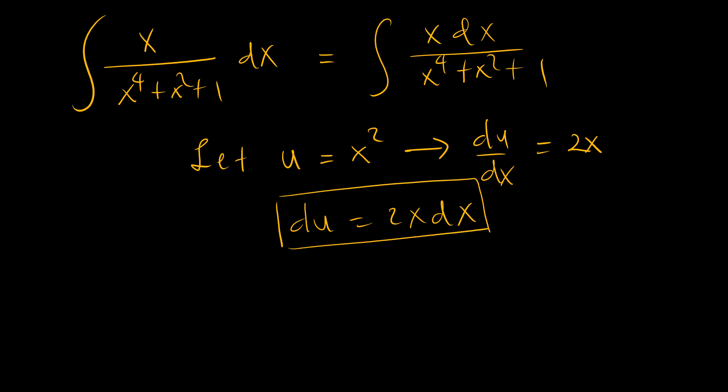Right? And so, our problem, x dx, is equal to a half of 2x dx at the top. And I have x squared, x squared, x squared plus 1.